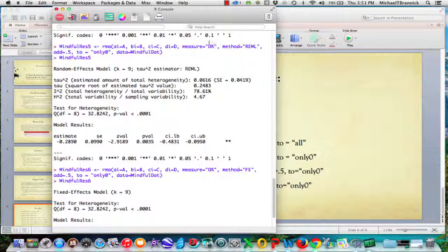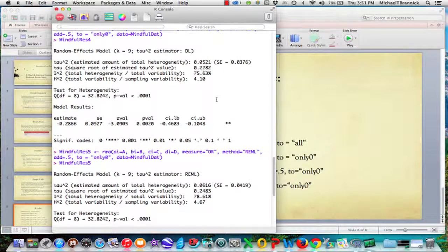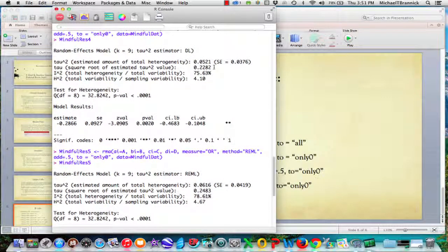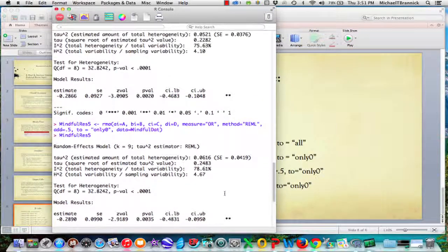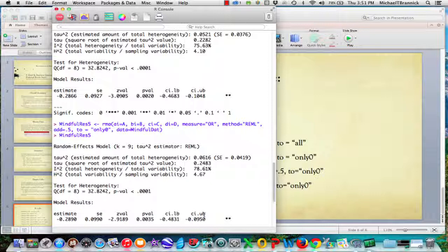I want to show you number five. Same input, same measure. Now it's restricted maximum likelihood instead of DerSimonian and Laird. We've got 2483 versus 2282, 75, 78. Our estimates are 2890 versus 2866 and -48 to -09, -46 to -10. The restricted maximum likelihood resulted in a slightly larger value of tau, and that changed the confidence interval and the overall estimate. You get close but not exactly the same when you use the different estimators.